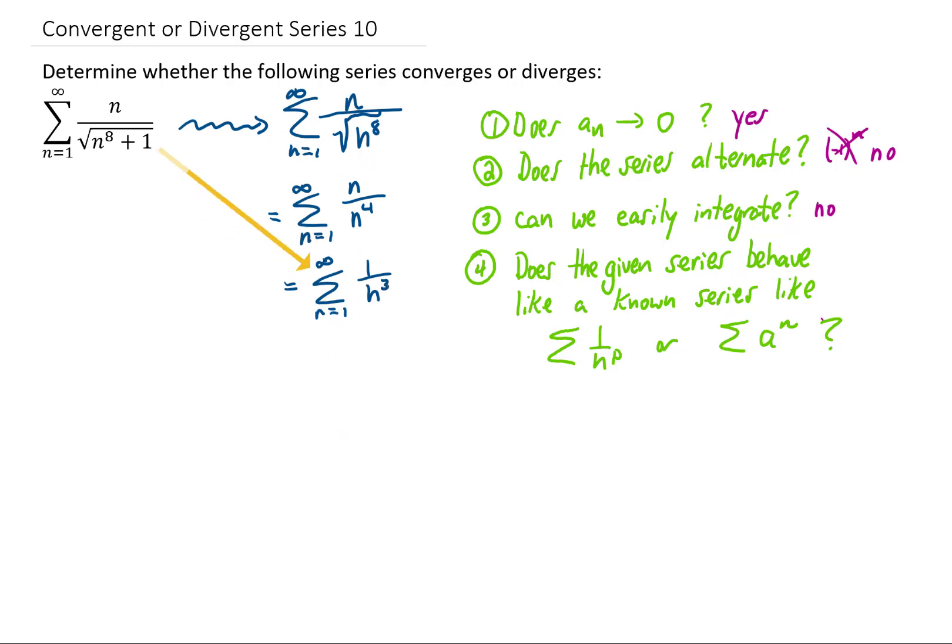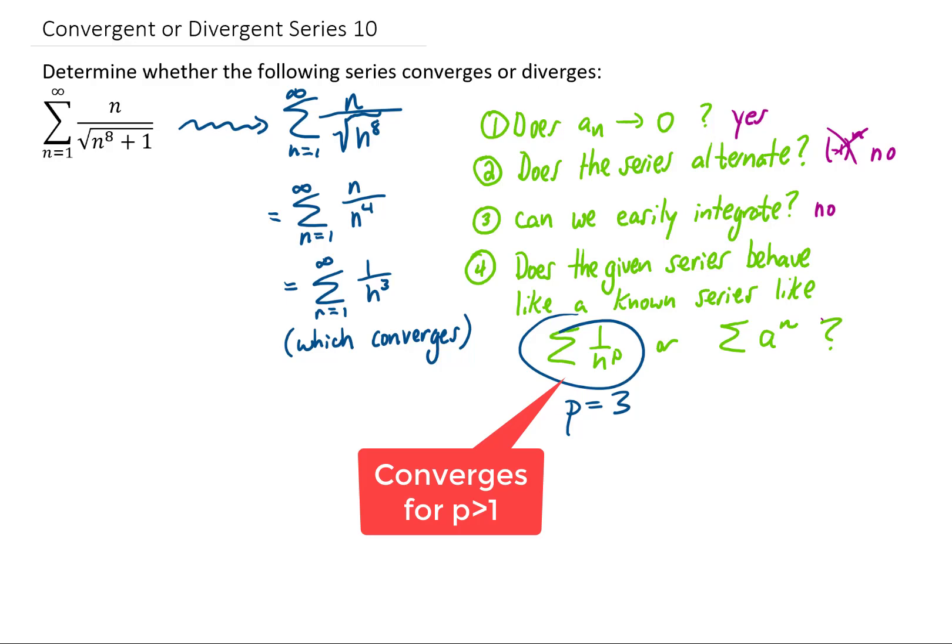So we actually expect this original sum to behave like a p series with p equals 3. Because p is bigger than 1, we expect our sum to behave like a convergent series. To confirm that, we technically need to do a limit comparison test.